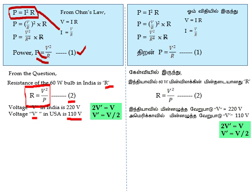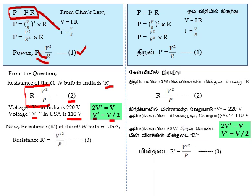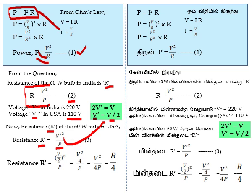The voltage in India is twice the voltage in USA, so 2·V_dash = V, which means V_dash = V/2. With this, I will find the resistance of the 60-watt bulb in USA, called R_dash. Using R_dash = V_dash²/P, substituting V_dash = V/2 gives R_dash = (V/2)² / P = V²/4 divided by P = V²/(4P).